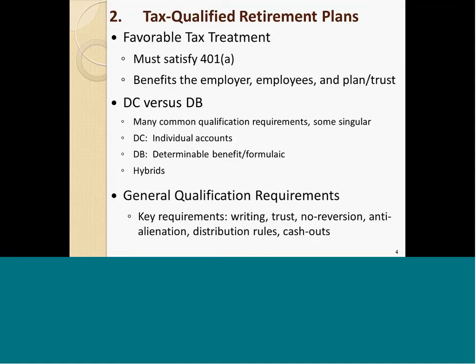Then we have some hybrid plans, which you all have heard about. We have cash balance plans — those are defined benefit plans that imitate in some ways a defined contribution plan by expressing every participant's accrued benefit as a hypothetical individual account adjusted periodically to reflect hypothetical earnings on hypothetical contributions credited in that year. We have age or service-weighted profit-sharing plans, target benefit plans, and there are all different kinds out there.